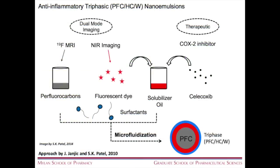How do we make these triphasic nanoemulsions? We have a dual-mode approach: fluorine MRI and near-infrared imaging, plus a therapeutic — in this case a COX-2 inhibitor. We combine perfluorocarbon and fluorescent reporters with a solubilizer oil that carries our drug, mix with surfactants, and then subject to microfluidization or high-shear processing. What we end up with is our triphasic system: perfluorocarbon, hydrocarbon, and water.